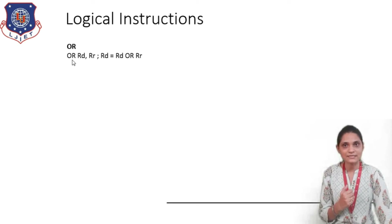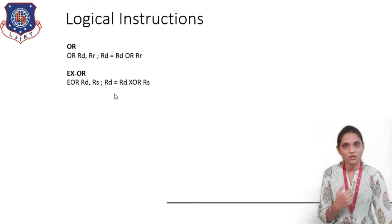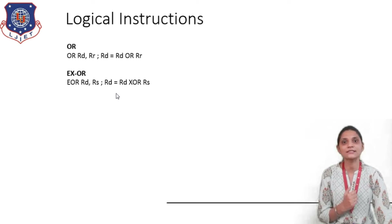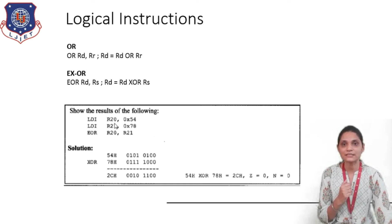Next is the OR instruction, similar to AND but performing OR operation. The syntax is OR Rd, Rr — where Rd is the destination register and Rr is the source register — and the operation is Rd = Rd OR Rr. Then there is the EXOR instruction, also with the same syntax: EXOR Rd, Rr — the EXORing of the contents of registers Rd and Rr is done and the result is stored inside register Rd.